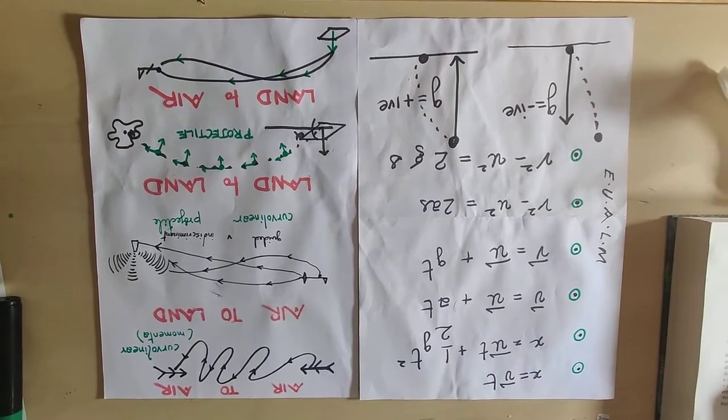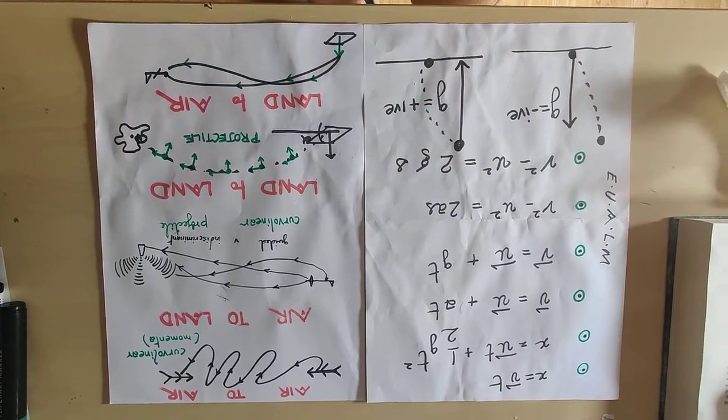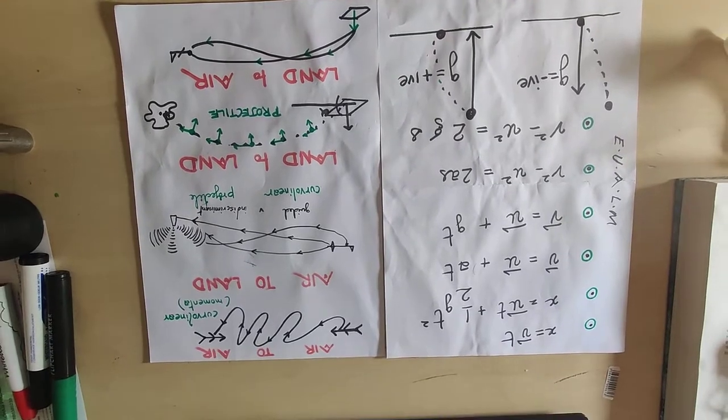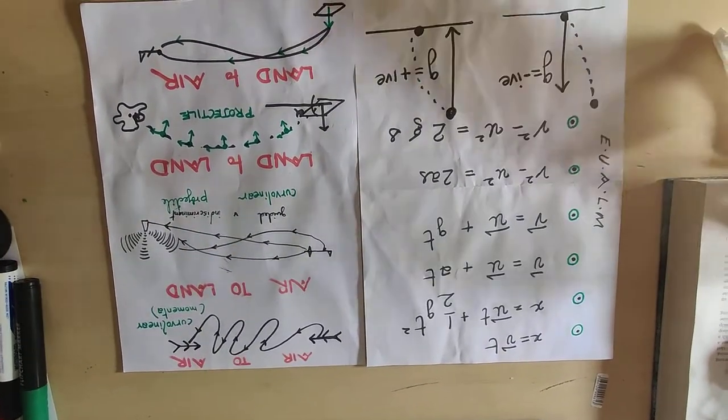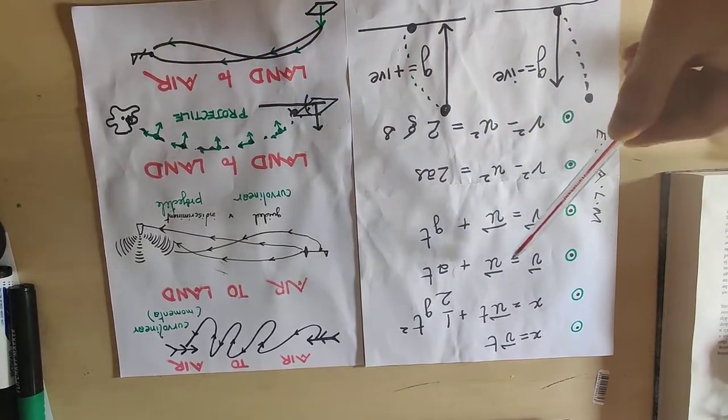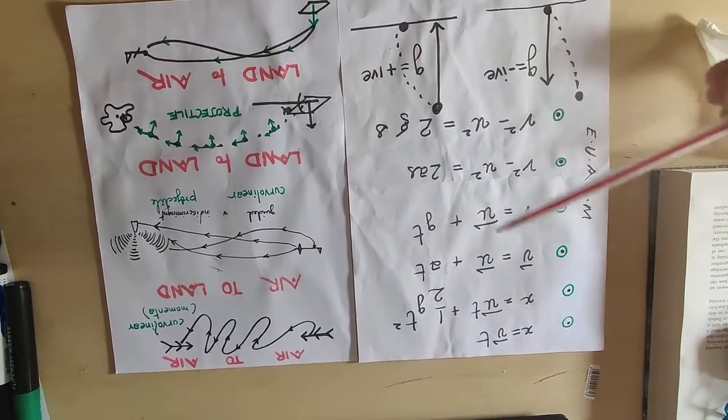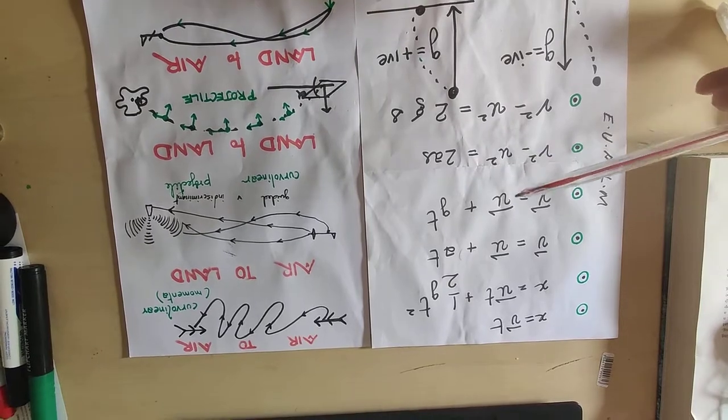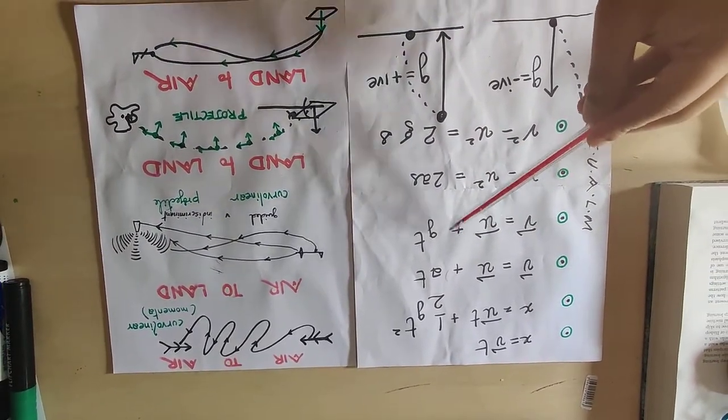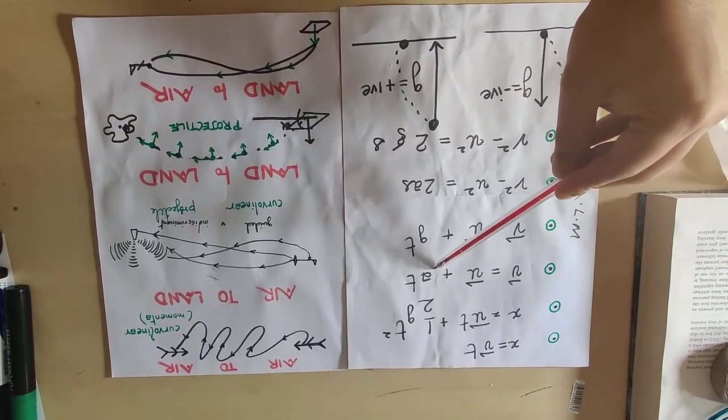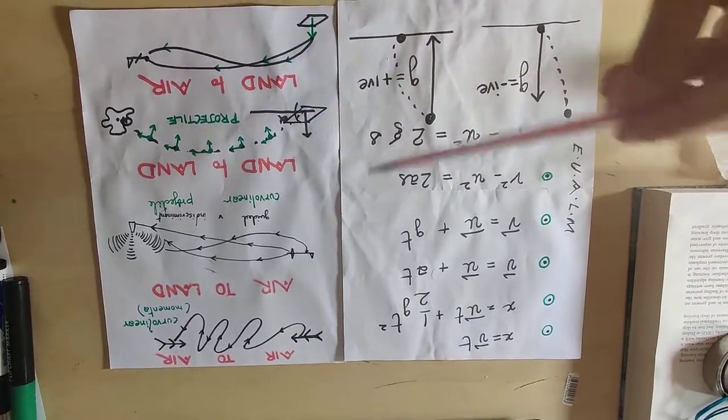I'd like to start off by saying the SUVAT equations - X equals VT and UT plus something, and then this one, this one, A and G. When we begin to discuss ballistics, G would be placed instead of A.